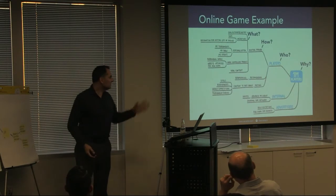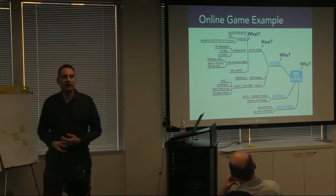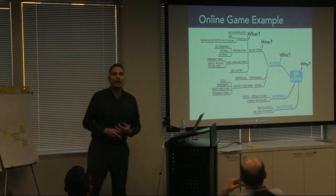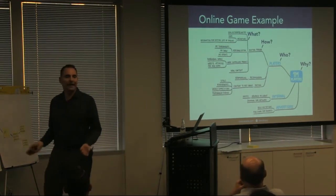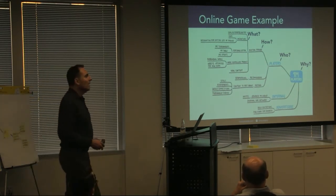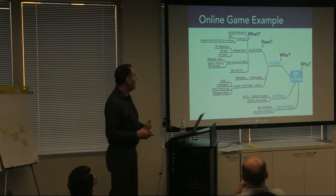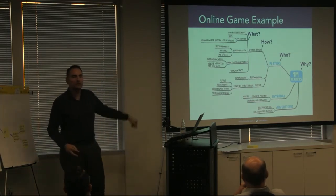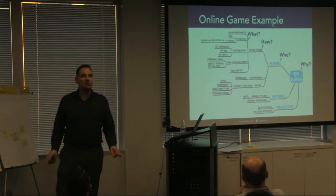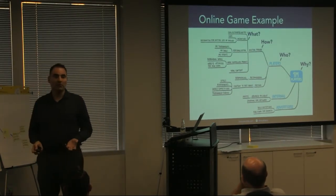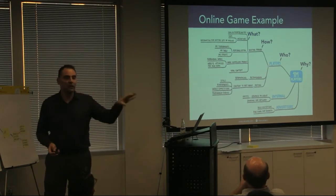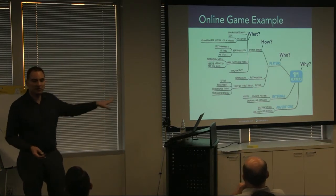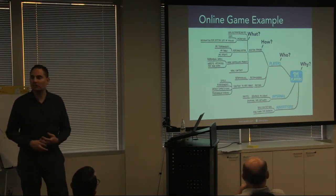Here's an example from the book. The map is flipped around with the WHY on the right side. This example is about an online gaming system and the goal is to get to one million players. There are different actors who can help with that, and the branch for players is fleshed out a lot more than the rest — which aligns with the Agile idea of progressive elaboration. We put more work and detail into the areas of the map we're going to deal with first.